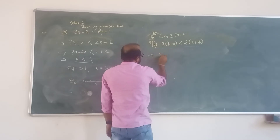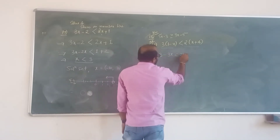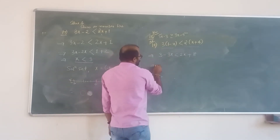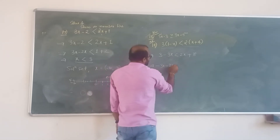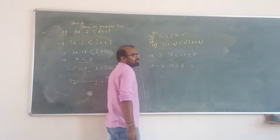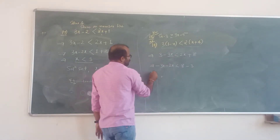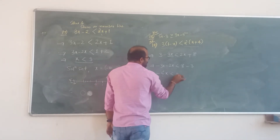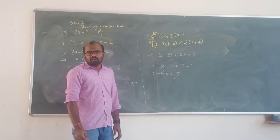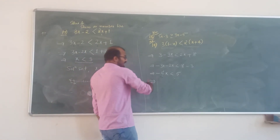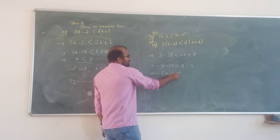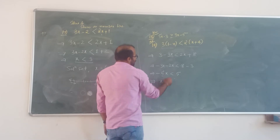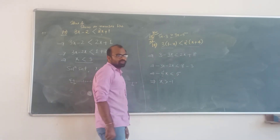3 into 1 minus x: 3 minus 3x less than 2x plus 8. Minus 3x minus 2x less than 8 minus 3. Result is minus 5x less than 5. Divide by minus 5. Dividing by a negative number — sign should change.